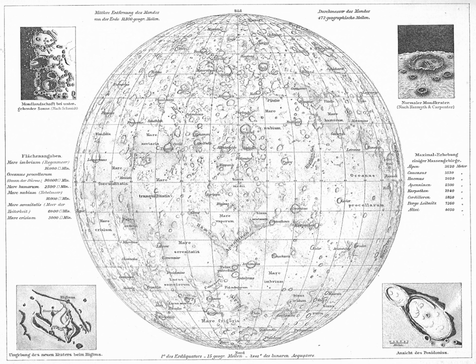Since the invention of the telescope, astronomers have given names to the surface features they have discerned, especially on the Moon and Mars. To standardize planetary nomenclature, the International Astronomical Union was assigned in 1919 the task of selecting official names for features on solar system bodies.